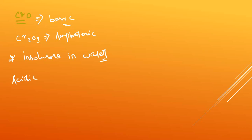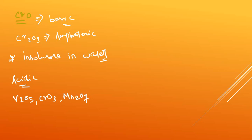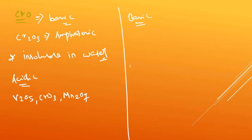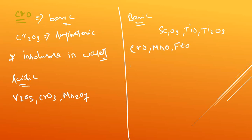Acidic oxides include: V₂O₅ (vanadium pentoxide), CrO₃ (chromic oxide), and Mn₂O₇. Basic oxides include: Ti₂O₃, CrO, MnO, FeO, Cu₂O, cobalt oxide, Fe₃O₄, and NiO.